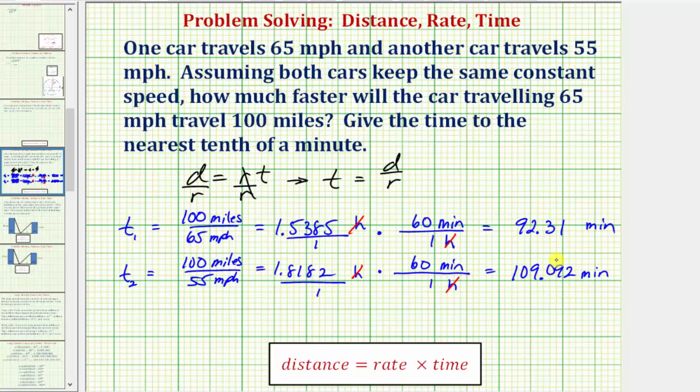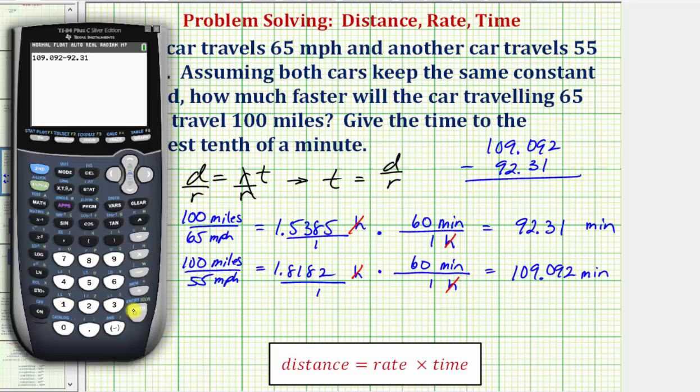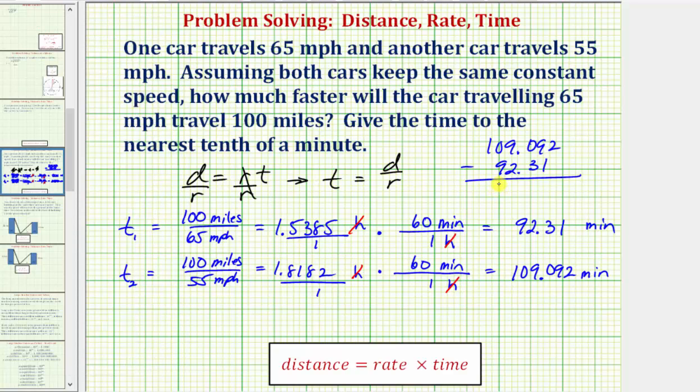To determine how much faster the car traveling 65 miles per hour travels 100 miles we want to find the difference of these times. So we have 109.092 minus 92.31 which equals 16.782. And of course this is still minutes and because we're asked to round to the nearest tenth we'll say the time is approximately 16.8 minutes.